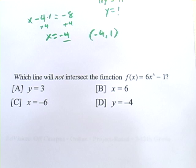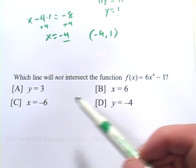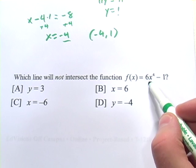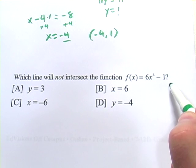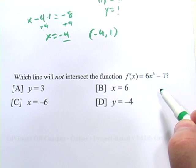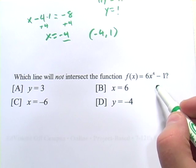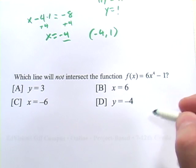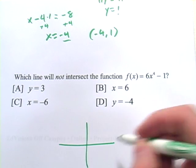Let's look at another one. This one asks where a line will not intersect a function. So which line will not intersect this function f of x equals 6x to the fourth minus 1? Now, there's a couple of ways you can approach this. If you have in your head an idea of what this function might look like, that would probably be an easy way to do it.